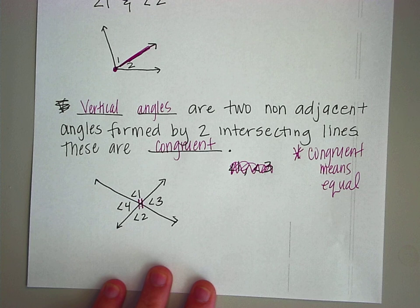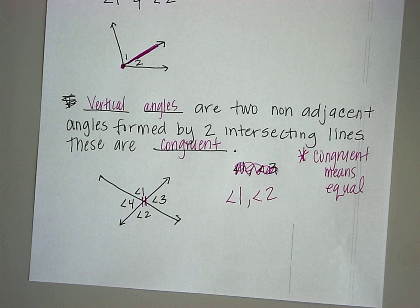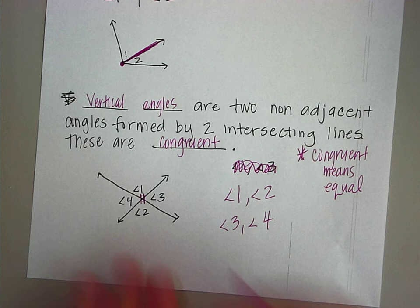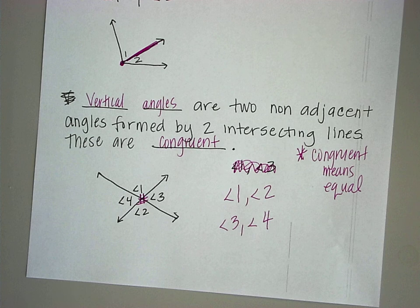Angles one and two are considered vertical angles. Vertical angles are simply across from each other. So if one and two are vertical angles, what do we think our other set of vertical angles are? Angle three and angle four — those are our vertical angles. They are across from each other.